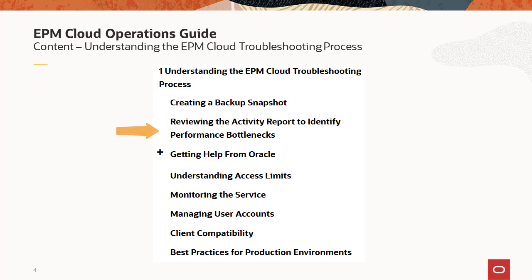If you cannot resolve the issue yourself, it gives you a general understanding of how to report the issue to Oracle. It gives step-by-step instructions on how to get a Fiddler trace if needed, or if you cannot install Fiddler in your environment, you can use network performance traces from browsers — with step-by-step instructions for every supported browser. It also provides information on how to use Provide Feedback to get Oracle the logs needed, and how to put all this information into a service request.